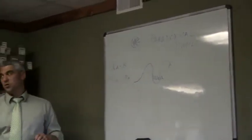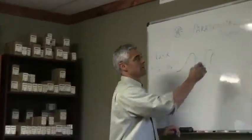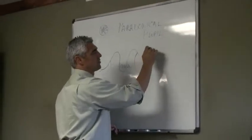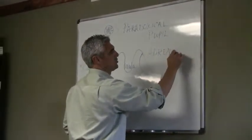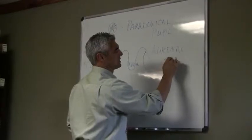What is a paradoxical pupil indicative of? Adrenal exhaustion. So, we've talked about the adrenals when we went through the thyroid. This is a true indication of adrenal exhaustion.